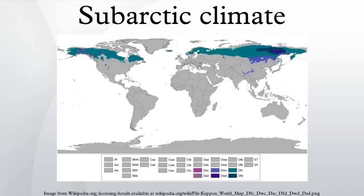These climates represent Köppen Climate Classification DFC, DWC, DFD, and DWD. In very small areas at high altitudes around the Mediterranean Basin, Iran, Tajikistan, Turkey, and the northwestern United States, the climate is classified as DFC with a dry summer climate, such as in Seneca, Oregon.